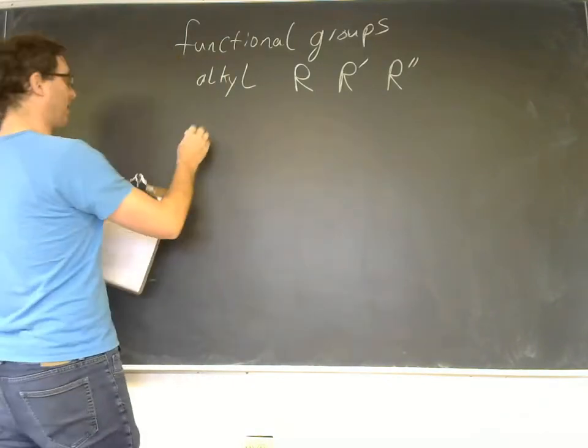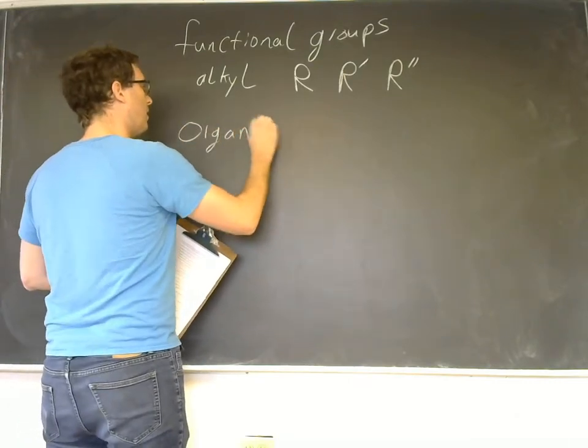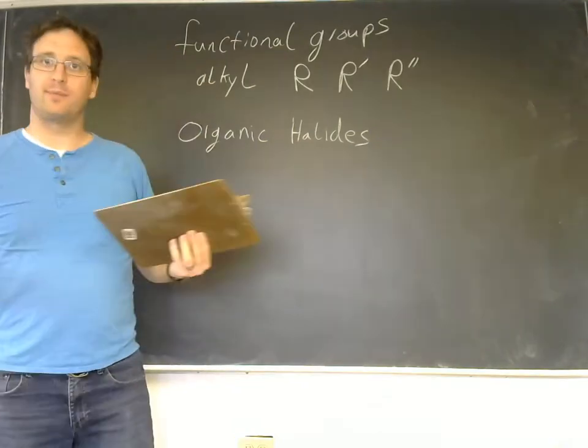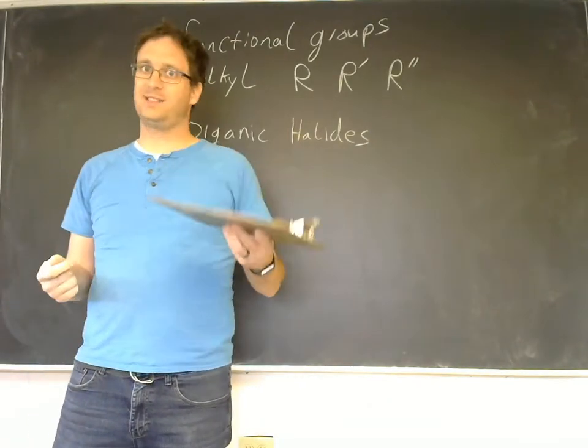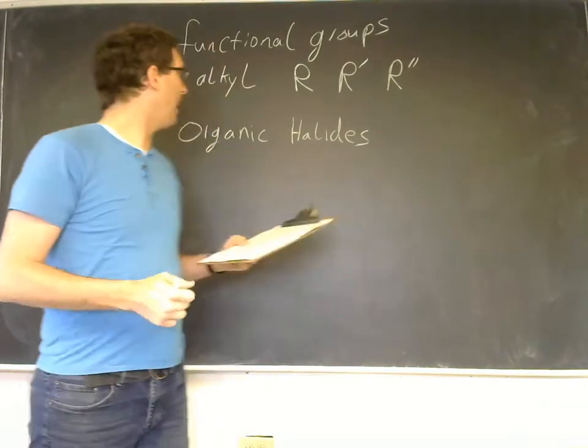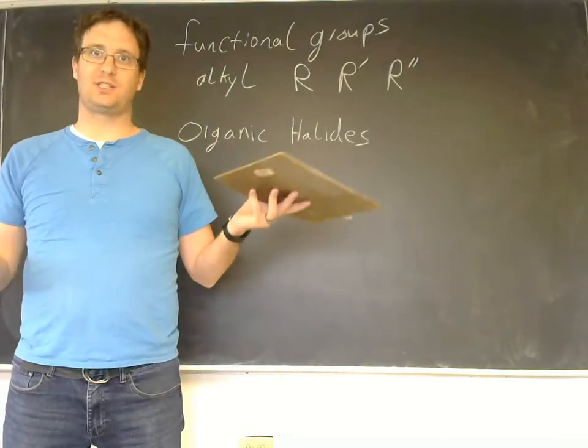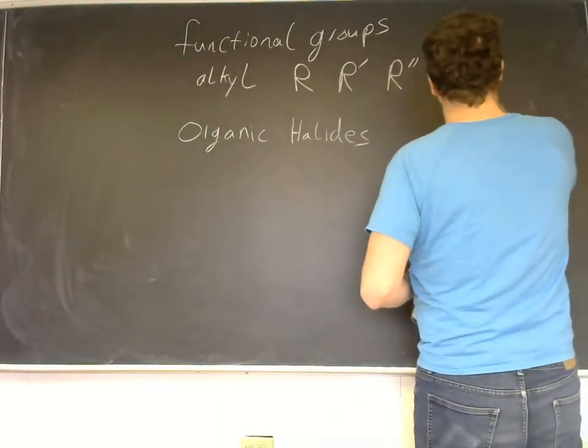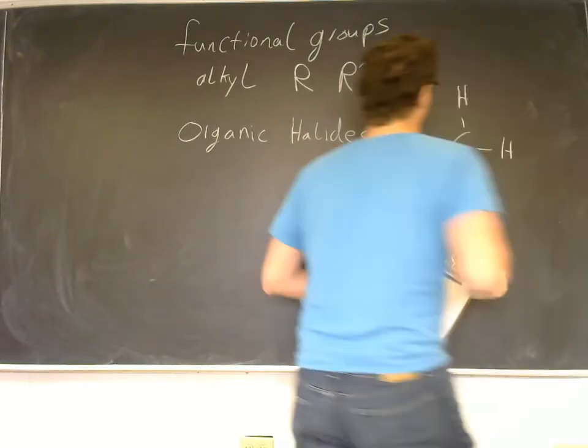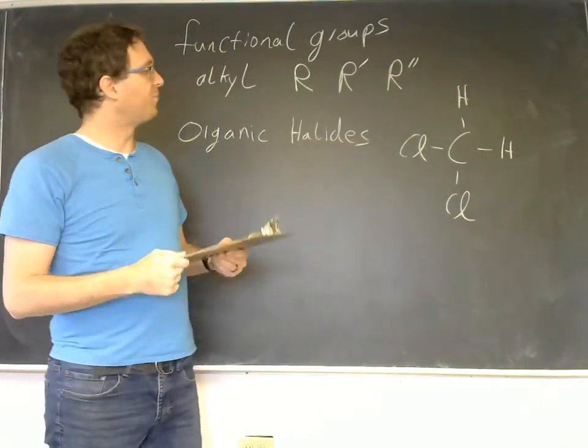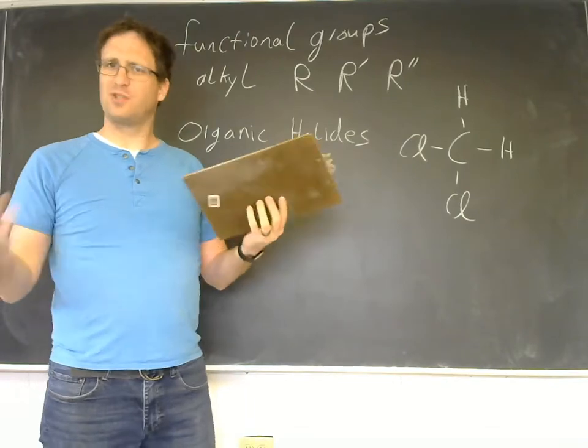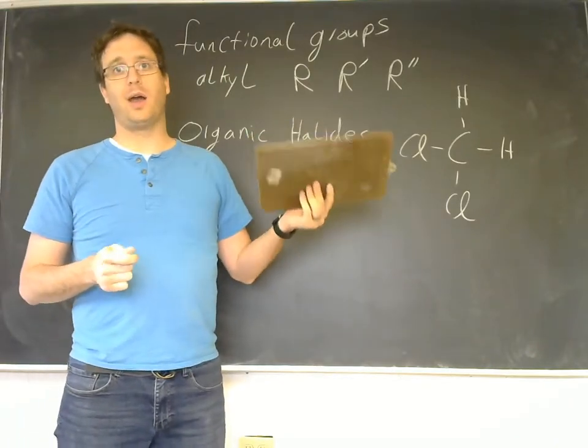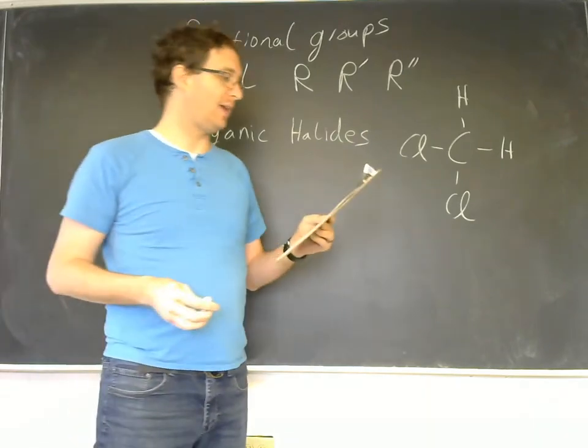The next group are organic halides, and we actually covered them yesterday with our discussion on alkanes, alkenes, and alkynes. Organic halides are just organic molecules where some of the hydrogen spots have been taken up by chlorine, bromine, iodine, or fluorine. Something like dichloromethane is an organic halide. We talked about how they're generated by reacting an alkane or alkene with chlorine, bromine, iodine, or fluorine.